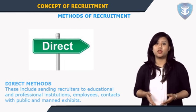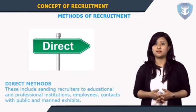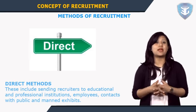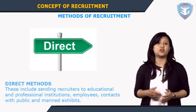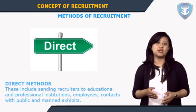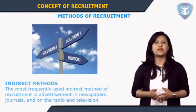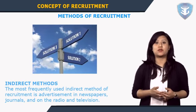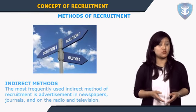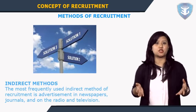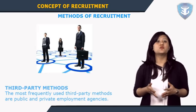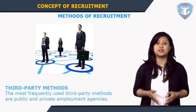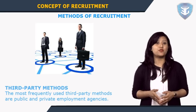The methods of recruitment differ from the sources of recruitment. Direct methods include sending recruiters to educational and professional institutions, employee contacts with the public, and manned exhibits — one widely used direct method is sending recruiters to colleges and technical schools, mostly done in cooperation with placement offices. The indirect method most frequently used is advertisement in newspapers, journals, radio and television, which enables candidates to assess suitability and is appropriate for reaching a large target group nationwide. Third party methods include public and private employment agencies, which handle factory, clerical, and professional employee recruitment.